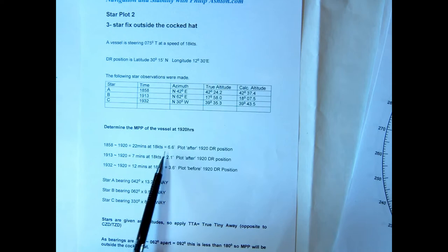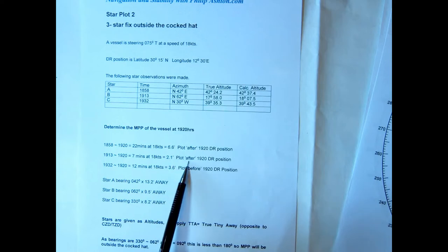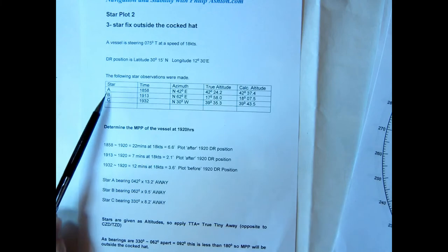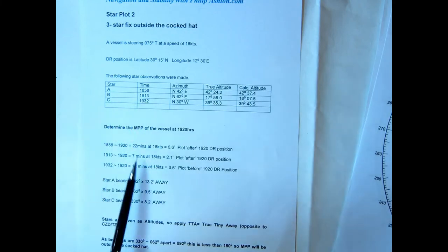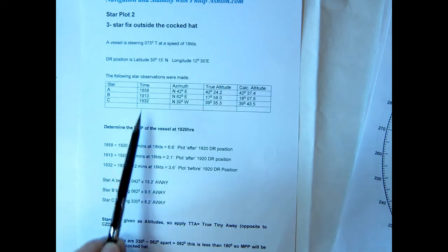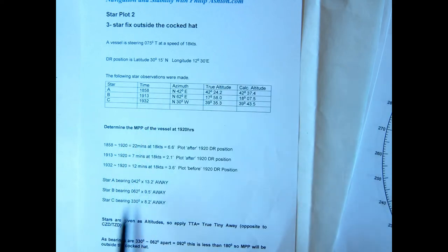So 6.6 miles after the DR position for the first star, 2.1 after the DR, and 3.6 before, because we look at the times and the difference. That's 22 minutes before, 7 minutes before, 12 minutes after. The bearings, because they're altitudes, true tiny is away. So star A bearing 042, 13.2 away, B and C.